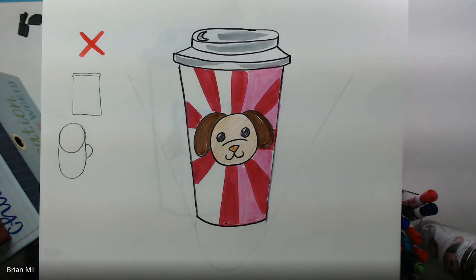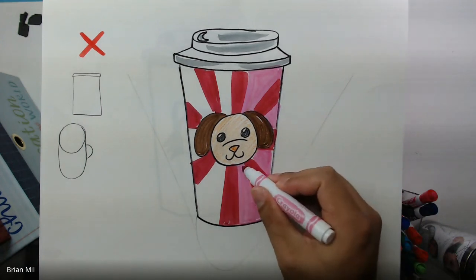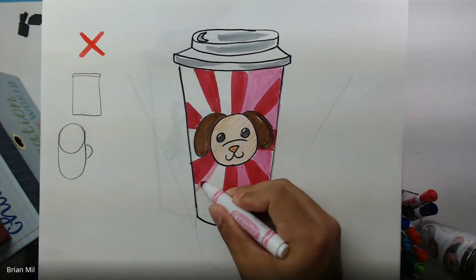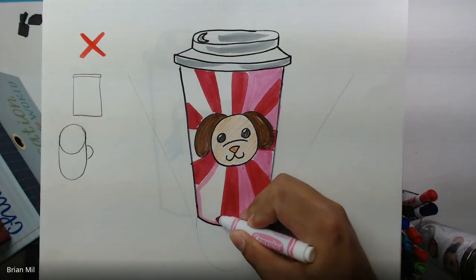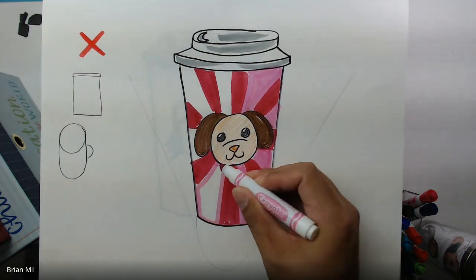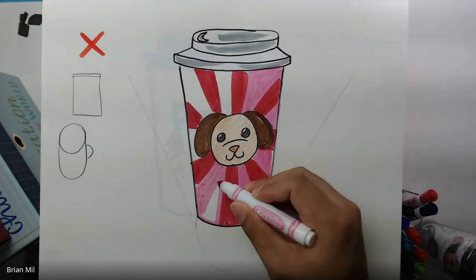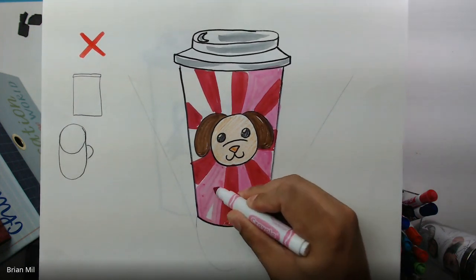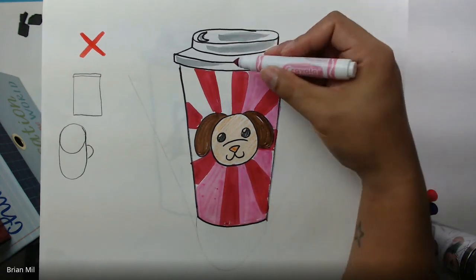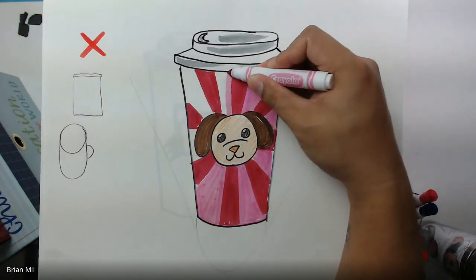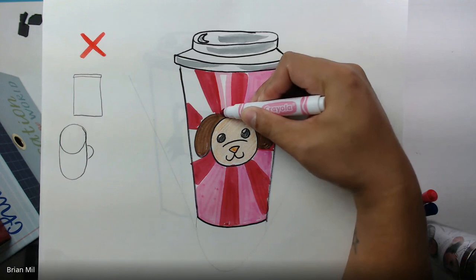I'm going to keep coloring. We have about two minutes left. If you do want to hold up some artwork that you've done either today or in the past to share with the whole class, you could just, you don't have to unmute yourself. You could just show it to the camera right now so everyone can see. You don't have to if you don't want to. I just thought, since we have time, you can share.